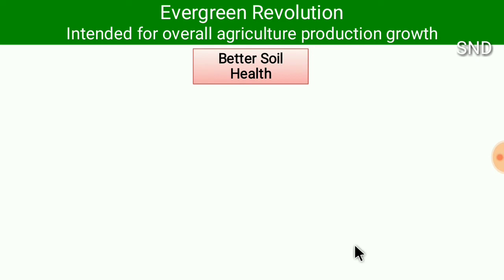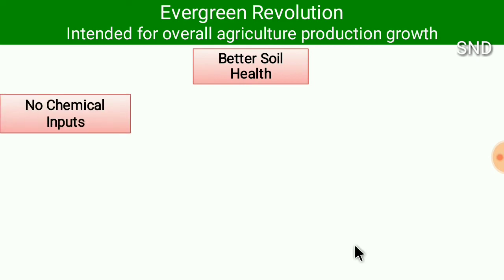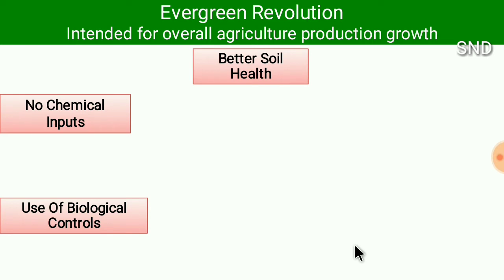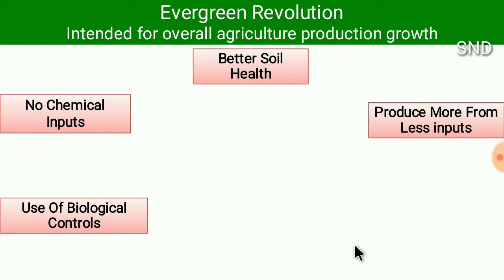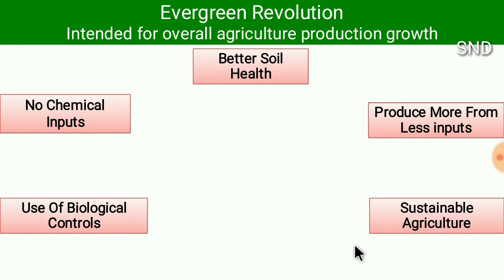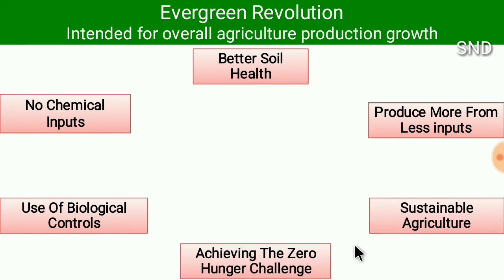Within the Evergreen Revolution, we have better soil health, no chemical inputs, use of biological control agents, and production of more from less inputs. Sustainable agriculture is a key part, and achieving the zero hunger challenge is the aim of the Evergreen Revolution.